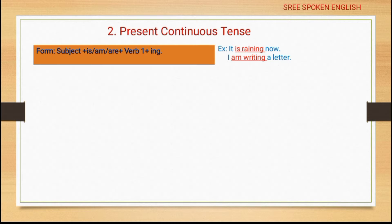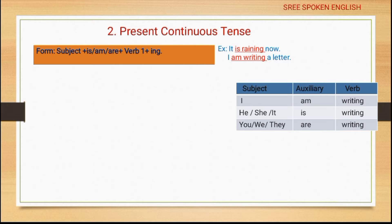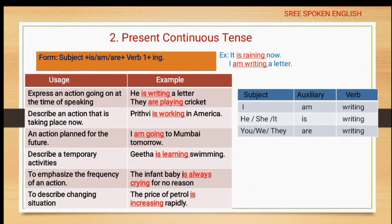'It' is a singular pronoun, so it takes 'is'. 'I am writing a letter' — 'am' is used for 'I'. In the table: 'I am writing'; for he, she, it — 'is writing'; for you, we, they — 'are writing'. We have a chart for present continuous tense showing all subject-auxiliary combinations.